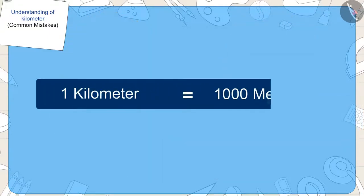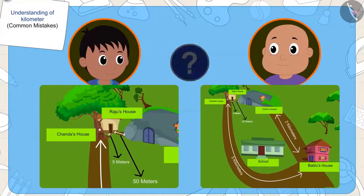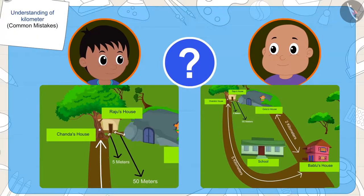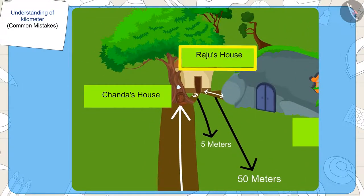Because, one kilometer is equal to one thousand meters. So, who's point is correct? Right! Raju's argument is right. His house is closer to Chanda's house.